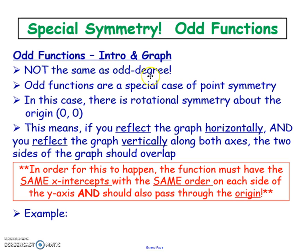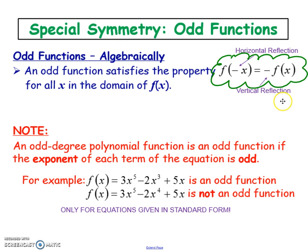Odd symmetry is also not the same as odd degree functions. Odd degree functions are anything with x³, x⁵, x⁷, x⁹, and so on — odd exponents. Out of those odd degrees, you may or may not have odd symmetry. You have odd symmetry if you reflect your original horizontally, and that copy is the same as if you had reflected your original vertically — a vertical flip equal to a horizontal flip.